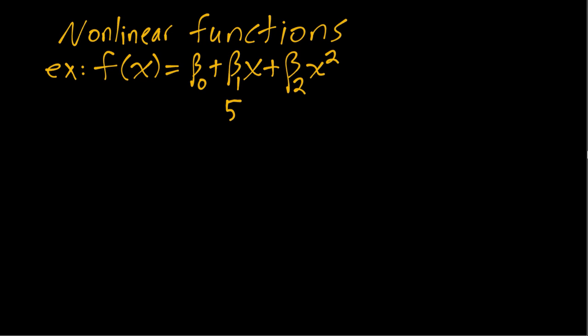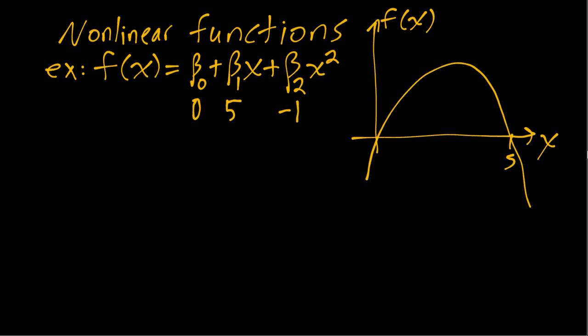But we'll see that's not true. For example, if beta naught is zero and beta 2 is negative 1, we can see this most easily by drawing a graph, which you can do yourself also. We get this parabola like this, and this is 5, this is the origin over here.